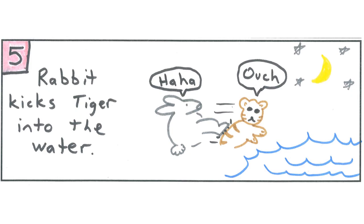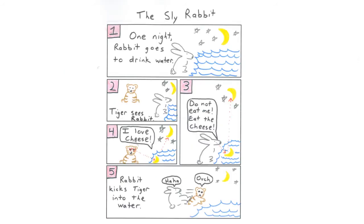In my last box, box number five, I drew the rabbit kicking the tiger into the water. You can see I used speech bubbles to show the rabbit laughing, ha ha, and the tiger getting hurt, ouch.